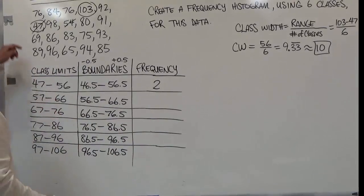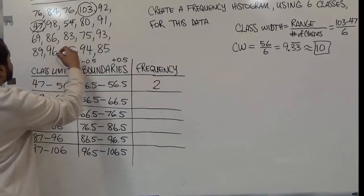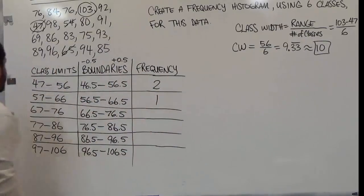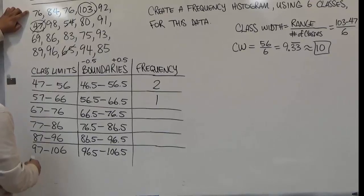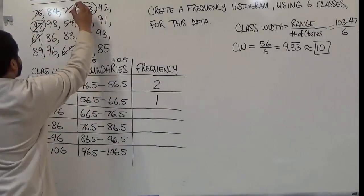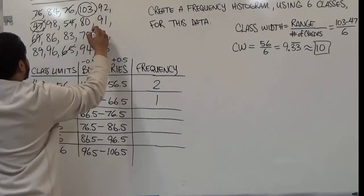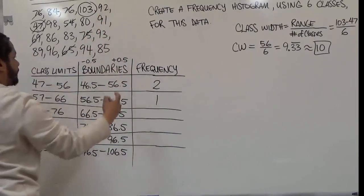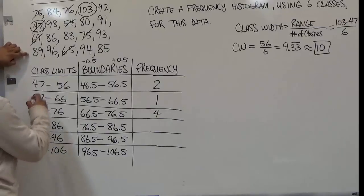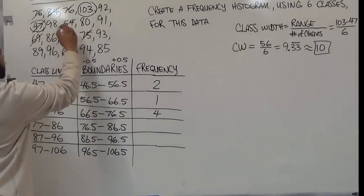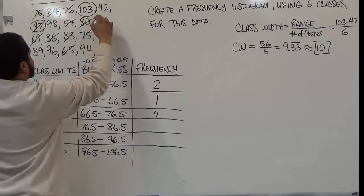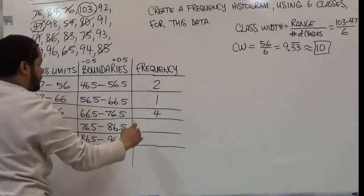For fifty-seven to sixty-six, we have just one value. For sixty-seven to seventy-six, we count one, two, three, four — so four values for that class. For seventy-seven to eighty-six, we count one, two, three, four, five — so five values for that class.